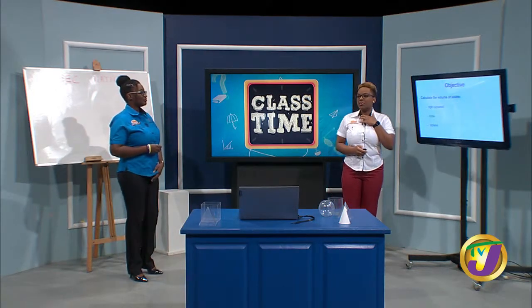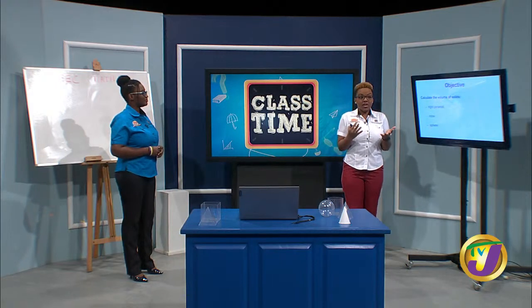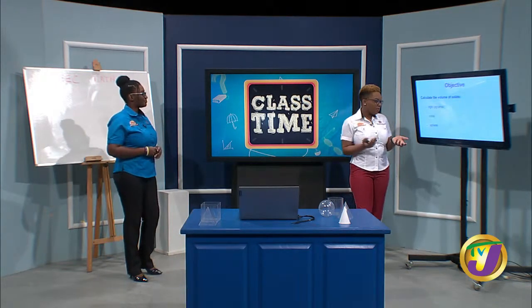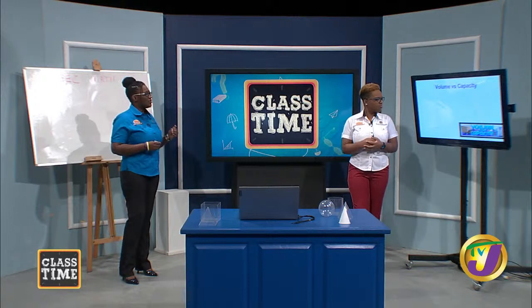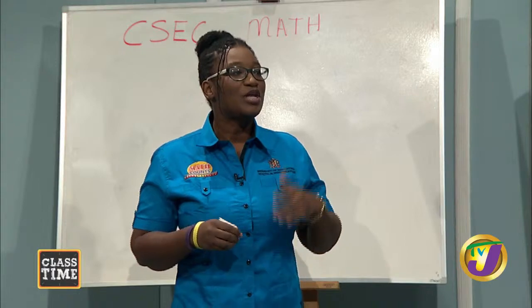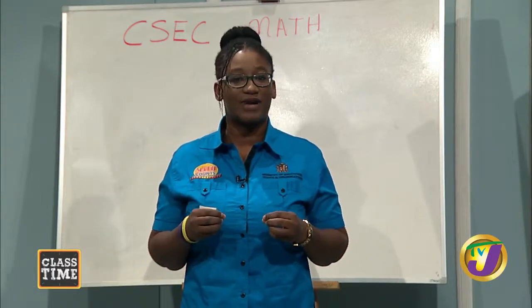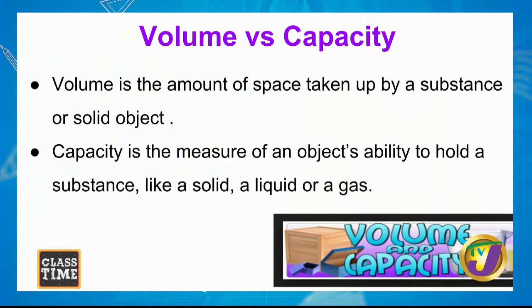As you said, Karima, we'll be looking at calculating the volume of solids — in particular right pyramids, cones, and spheres. But first we want to talk a little bit about volume and capacity. The volume is the amount of space taken up by a substance, whether it's solid or otherwise. Capacity is the measure of an object's ability to hold a substance, like solid, liquid, or gas.